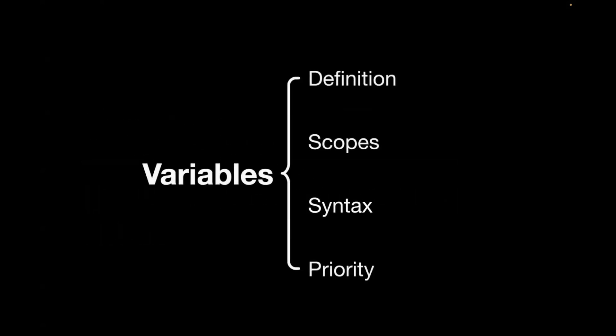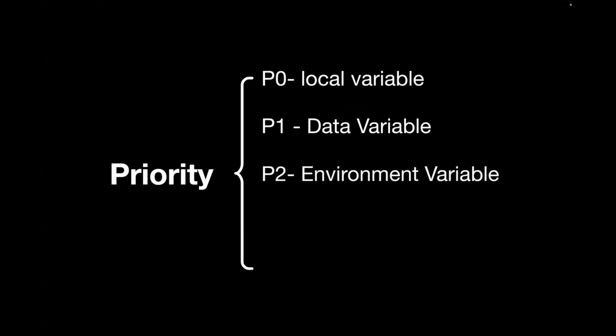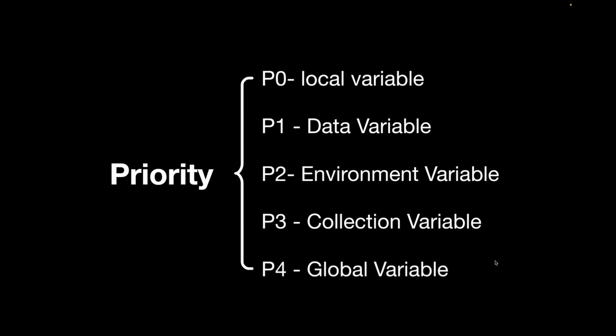Next comes the priority of variable scopes. This is very important and one of the most famous interview questions as well. P0 means the top priority. The first priority is given to local variable. If you have a variable named URL defined as a global variable, collection variable, environment variable, data variable, and local variable, the first priority would be given to local variable. Then the second priority is given to data variable, then environment variable, then collection variable, and the last priority is given to global variable.